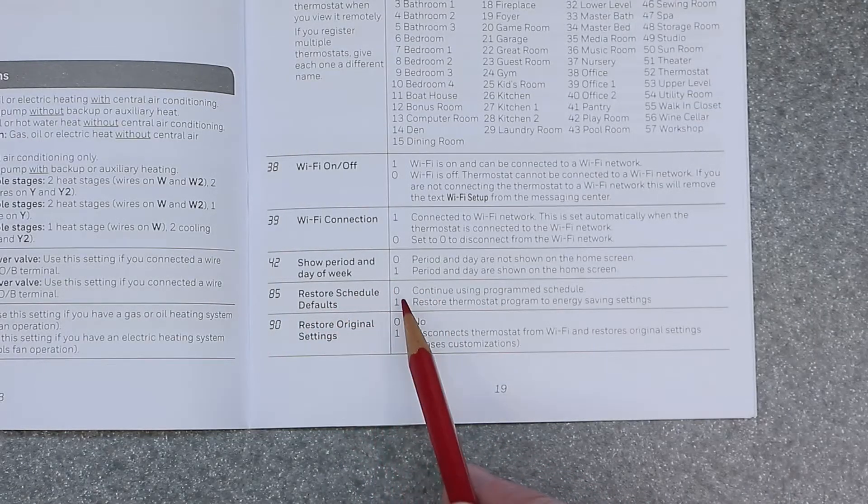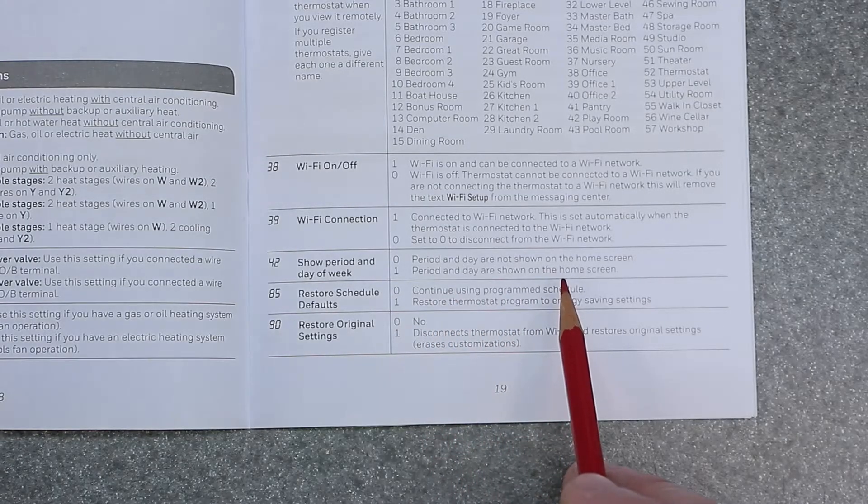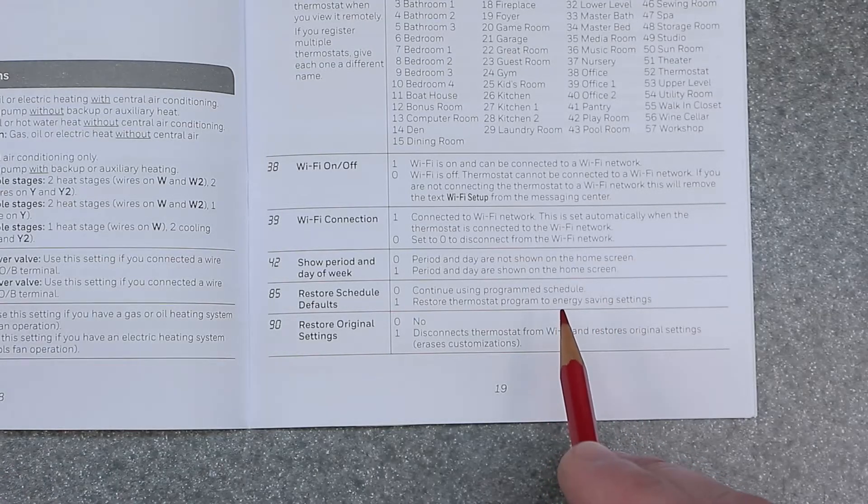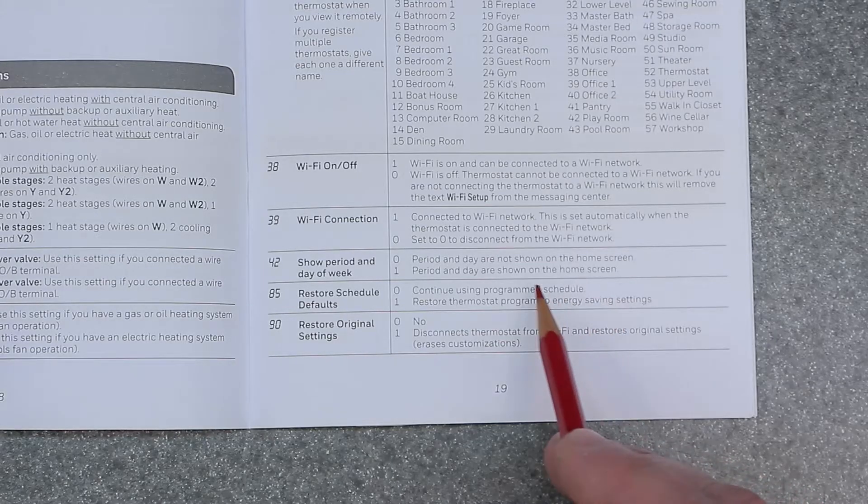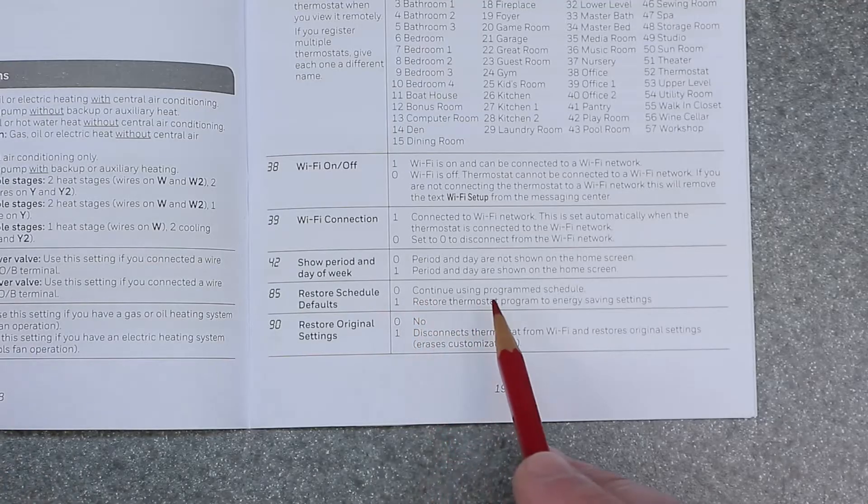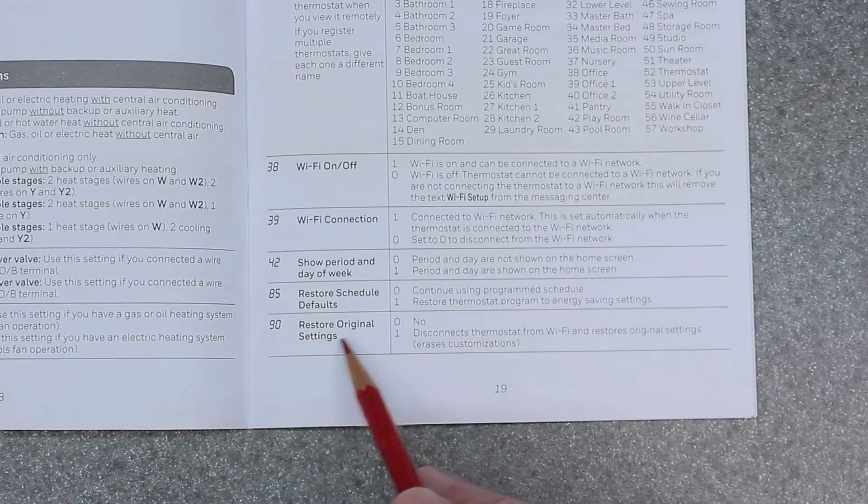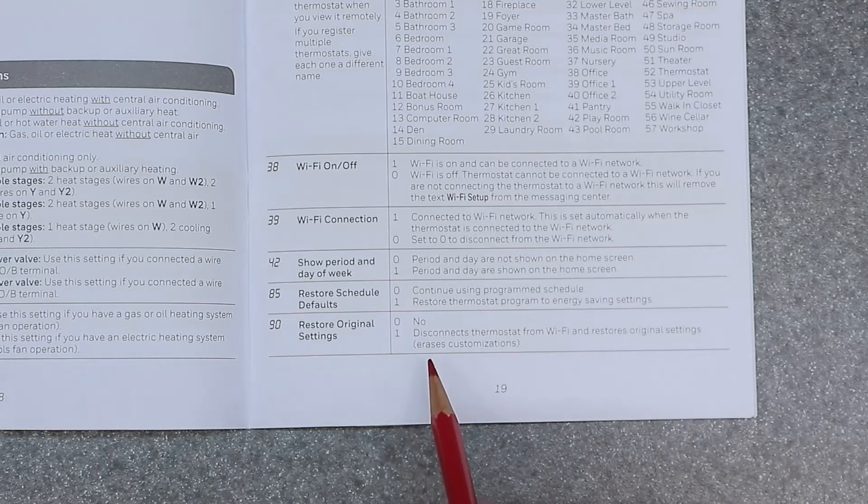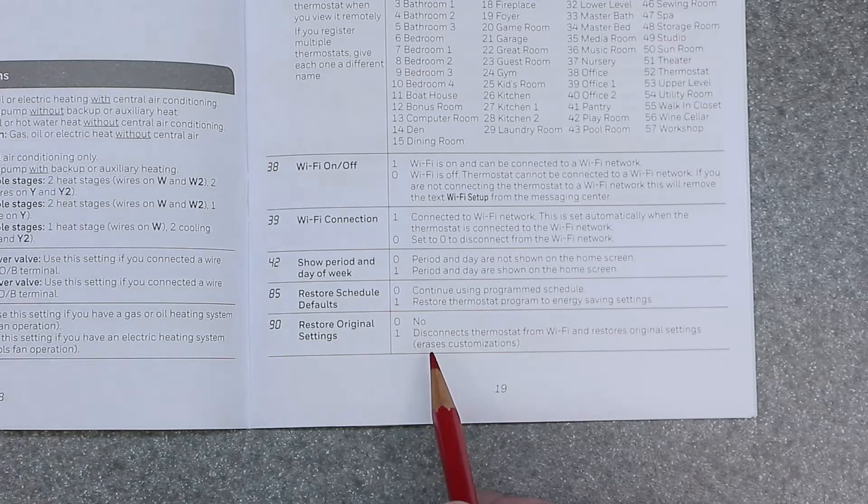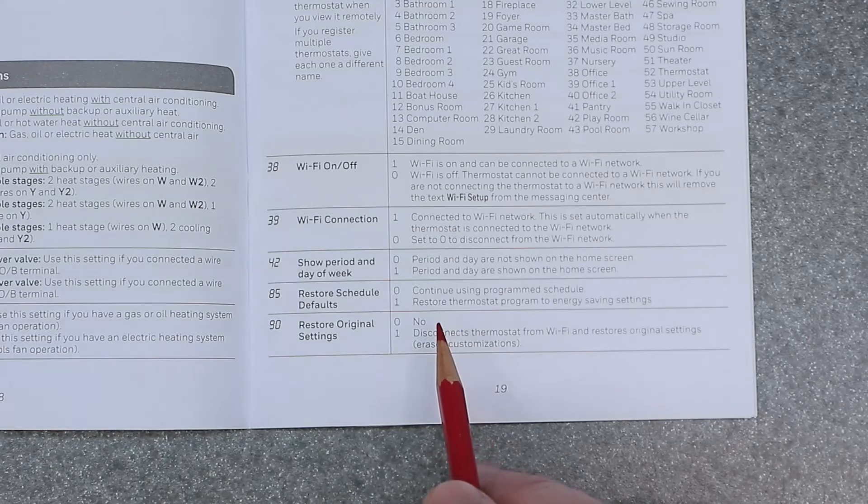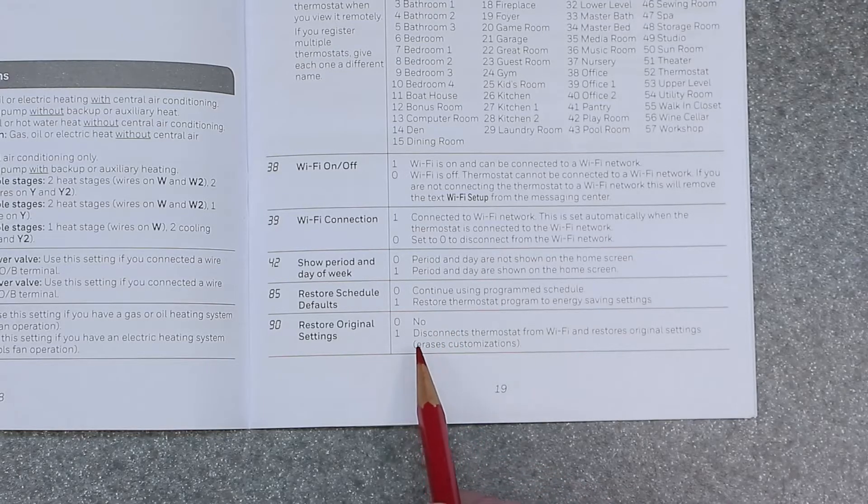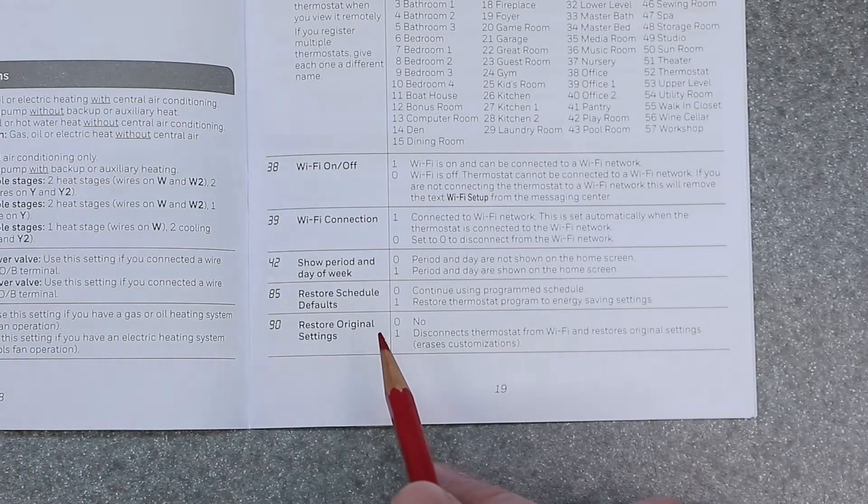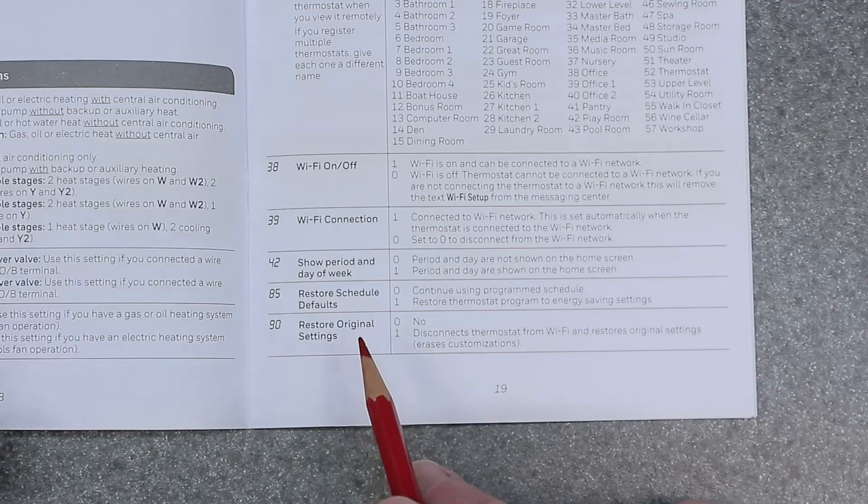85 is restore schedule defaults, which is zero continue using program schedule. So the existing schedule that you programmed, you want to keep that or one equals restore thermostat program to energy savings settings. So that's going to change it to the factory defaults. You probably don't want that because they're going to be not tailored to your liking. So I will leave that on zero and continue programming your device accordingly. 90 is going to be restore original settings. Zero equals no. One equals disconnect thermostat from Wi-Fi and restore original settings. So this right here is going to completely delete everything off the device when it comes to programming of your schedule, all your parameters. If you set up your Wi-Fi, it's going to remove all that information and you're going to have to redo that all over again. So be very careful. If you don't have to do this, don't do that and go ahead and reset your schedule only, which is 85. But if you want to start from scratch, if you bought the thing used or got it from a friend or eBay, you're going to want to do a factory restore right off the bat. And I have a separate video on how to do this.